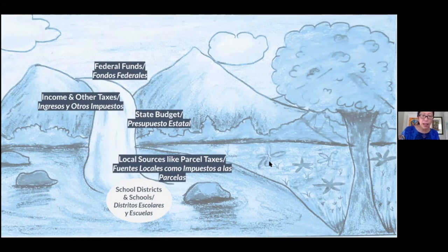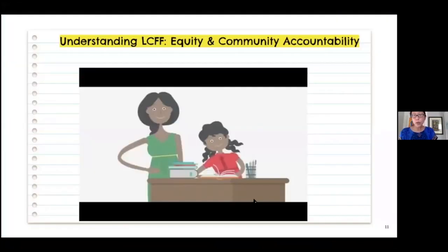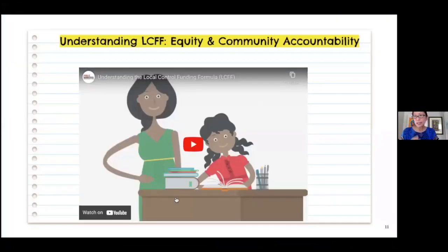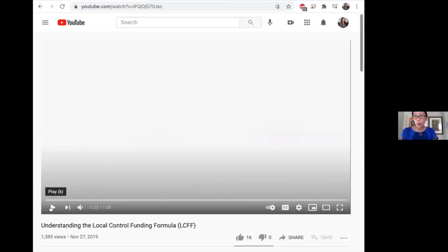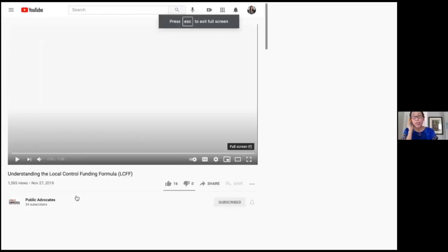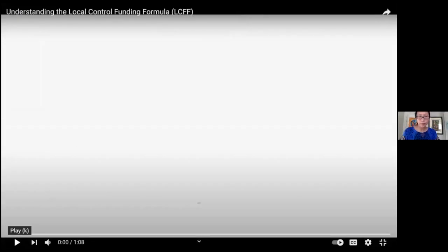There are also local funds. In Oakland, we have Measure N that helps fund some programs in middle and high school, and all of those feed this lake with resources for our schools. One of the main funding mechanisms in California is called the Local Control Funding Formula. We're going to watch a quick video, about a minute long, about the Local Control Funding Formula.